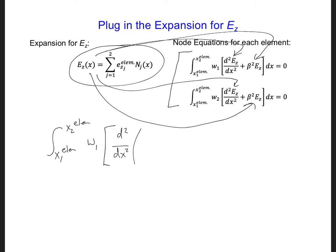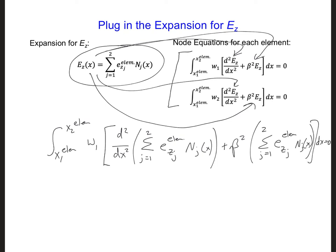So, from x1 for the element to x2 for the element, we're integrating w1, since we're writing it out for node 1 first. And we have the second spatial derivative. And now here, in the place of Ez, I'm going to put the summation, j equal 1 to 2 for Ez, the element, times N_j. And then we have beta squared. And again, the summation, j equals 1 to 2, our expansion for Ez dx. And that's equal to 0.